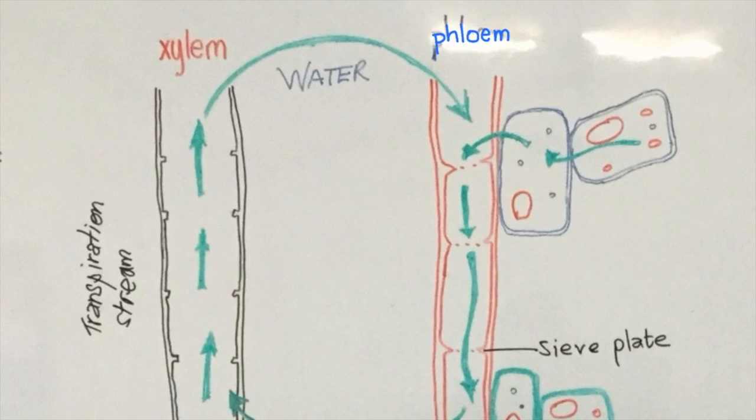But one of the key areas to understand is exactly how does the phloem get loaded? Because it requires the movement of sugar or sucrose from an area of relatively low concentration to an area of relatively high concentration. In other words, it requires movement against a concentration gradient. And for this movement against a concentration gradient to happen in a living system, then energy needs to be expended from that living system.